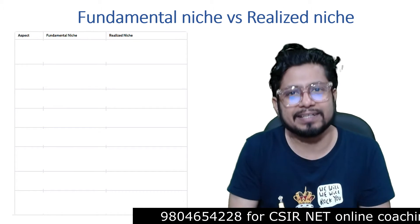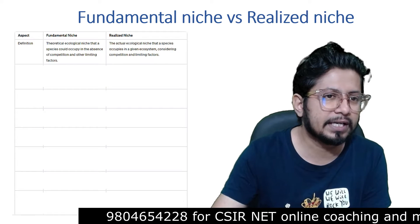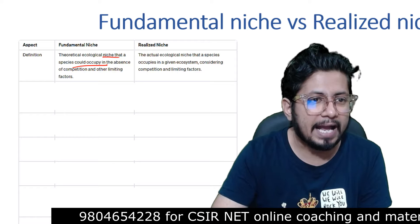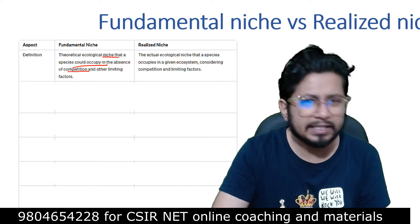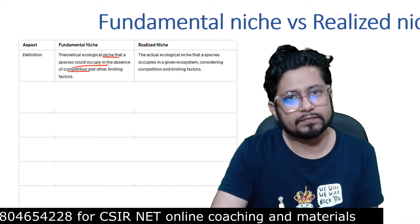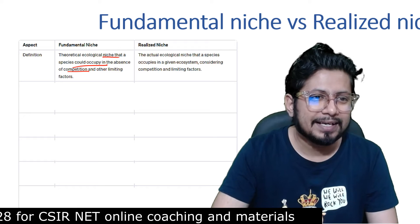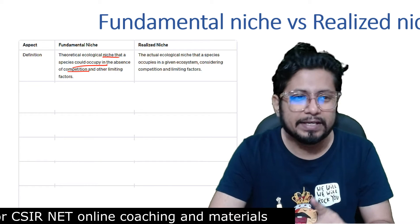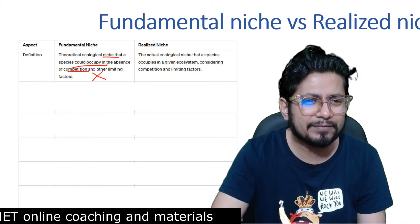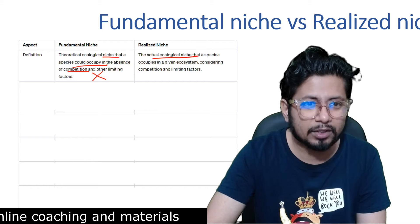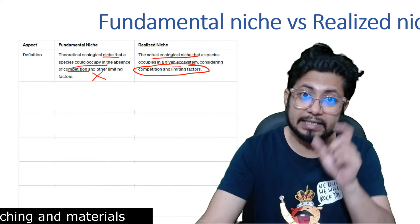Generally, the fundamental niche is a broader aspect and the realized niche falls within it. The definition of fundamental niche is: the theoretical ecological niche that a species could occupy in the absence of competition and other limiting factors. In an ecosystem there is always competition — biotic factors, food interactions, and abiotic factor changes all impact organism growth. Realized niche is the actual ecological niche that a species occupies in a given ecosystem, considering competition and limiting factors.